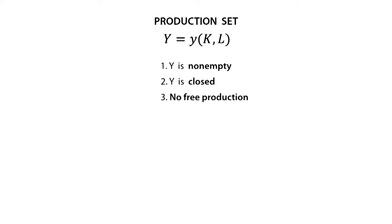Thirdly, there is no free production, which basically means that all production will imply using inputs to some extent. And the last common property is free disposal. This property means that firms are able to throw any input they do not need to use.